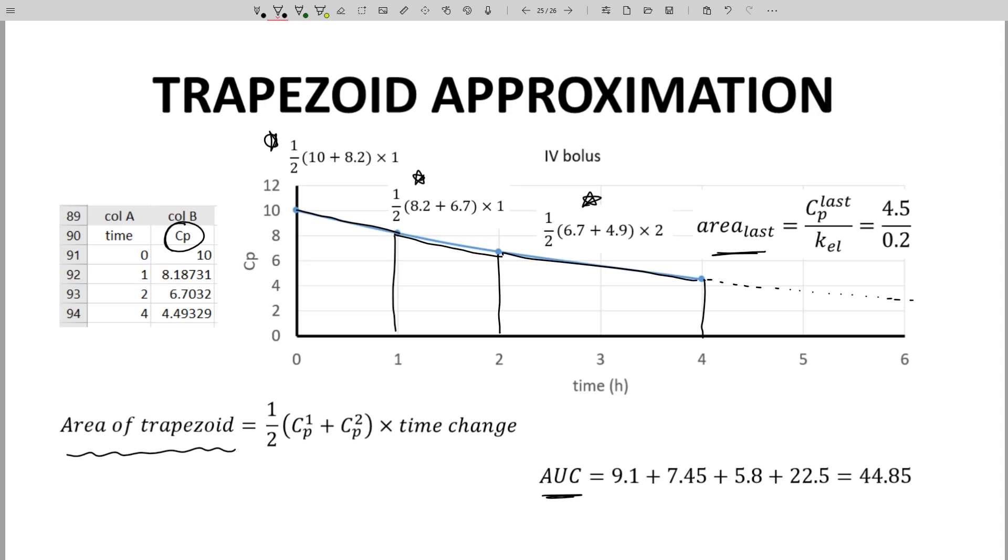I haven't been careful with units. Let's assume that the units on CP are micrograms per milliliter. The units on AUC would be microgram hours per milliliter.